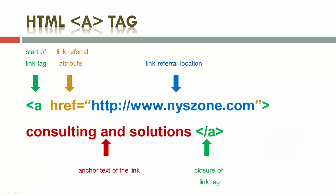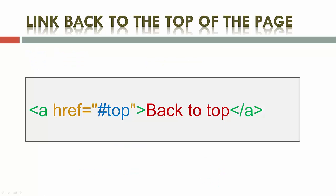A URL fragment is a name preceded by a hash mark which specifies an internal target location within the current document. For example, for creating a link back to the top of the page, you can use the special fragment top.